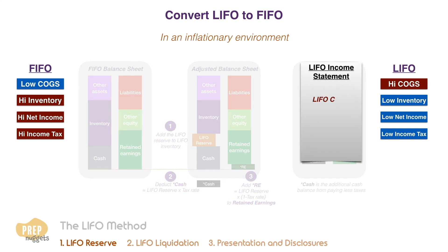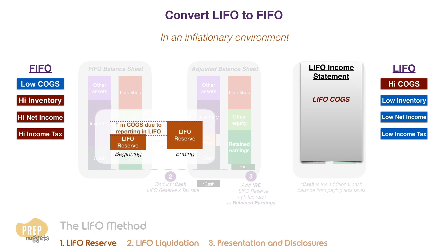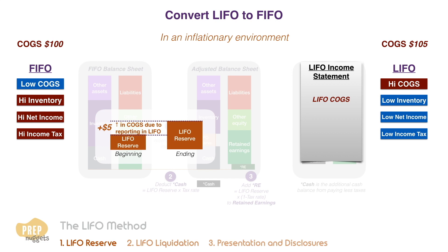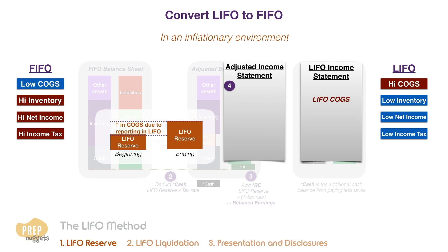Over at the income statement, the analyst has to adjust the cost of goods sold. To give us a clue, we need to consider the previous period's LIFO reserve. During an accounting period, the change in the cost of goods sold due to reporting in LIFO instead of FIFO is accumulated to the LIFO reserve. For example, if a company's cost of goods sold in this period is $100 under FIFO but is $105 under LIFO, $5 has to be added to the LIFO reserve. So to adjust the LIFO statement to a FIFO statement, $5 should be subtracted from the cost of goods sold. In general, the analyst should subtract the change in LIFO reserve for the period from the LIFO cost of goods sold.